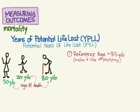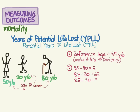Once you've picked your reference age — and it makes sense to pick the life expectancy for this population — you subtract the age of death from the reference age. So for deaths at 80, 20, and 50, that gives us 5, 65, and 35 respectively.